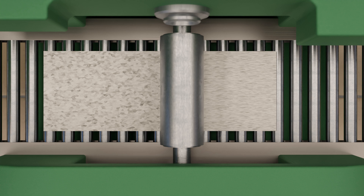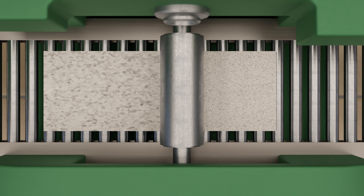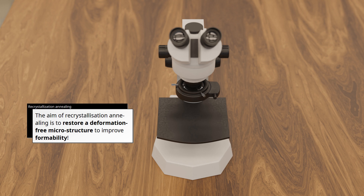The effect of recrystallization can also be used during the forming process by forming at the recrystallization temperature, which is called hot forming. If the material is formed below the recrystallization temperature, this is called cold forming. Hot forming places much higher demands on the machines involved, so the economics must always be considered. The aim of recrystallization annealing is to restore a deformation-free microstructure to improve formability.